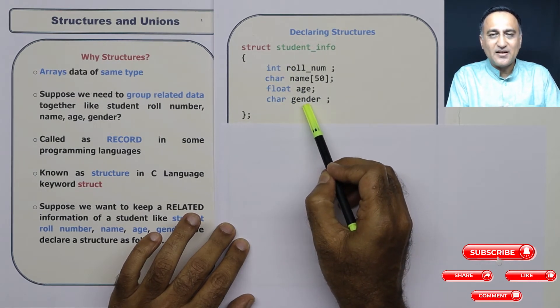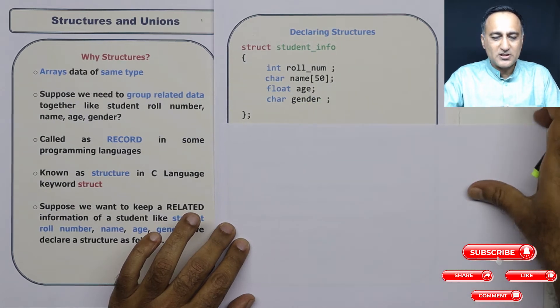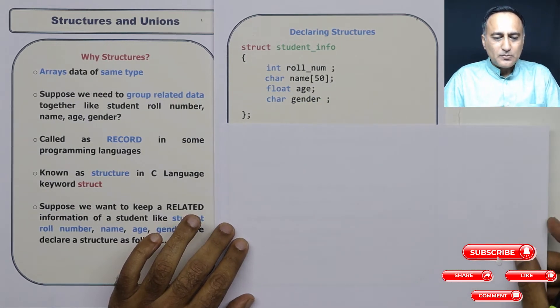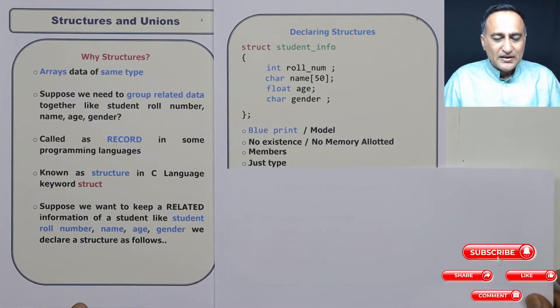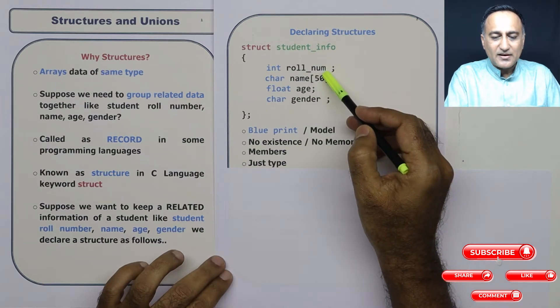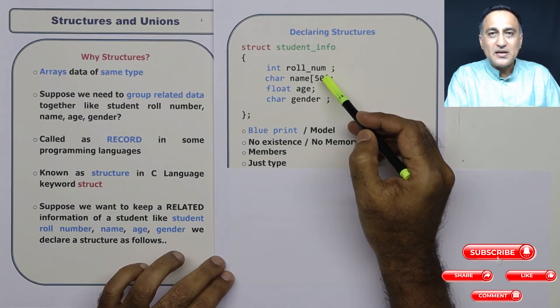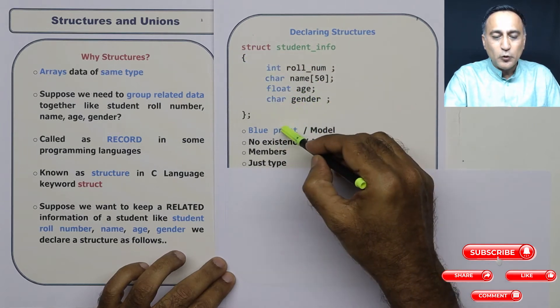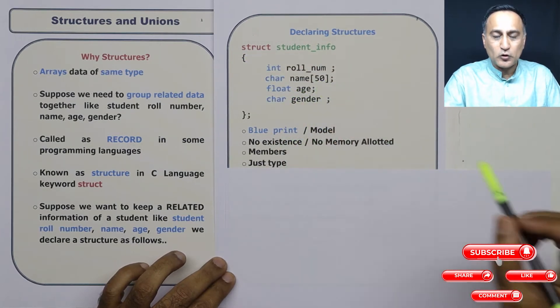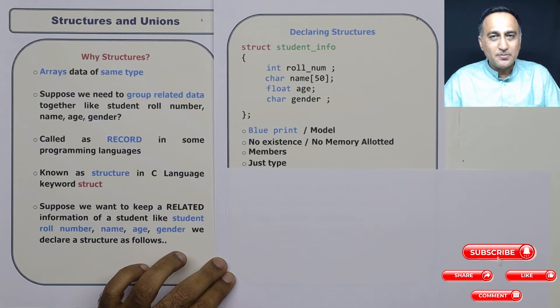And then gender is a character, which will either be M, F or O for others. Now, you need to understand something very important here. This thing here does not occupy any memory space because this is just a declaration of a blueprint or a model or a prototype. Let me tell you in more simple words.